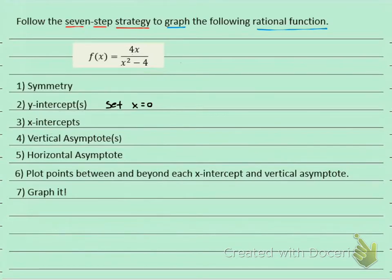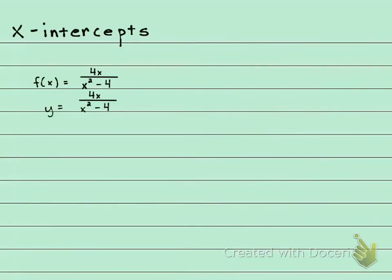And how do you find an x-intercept? To find an x-intercept, you set y equal to 0. So we're going to plug in 0 for y, right there, and then we're going to have 4x over x-squared minus 4.